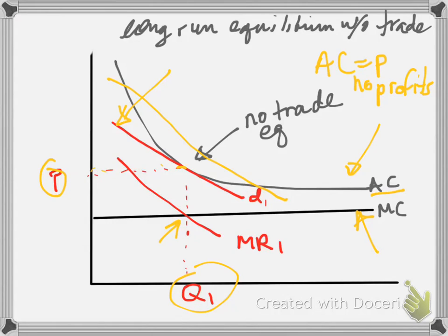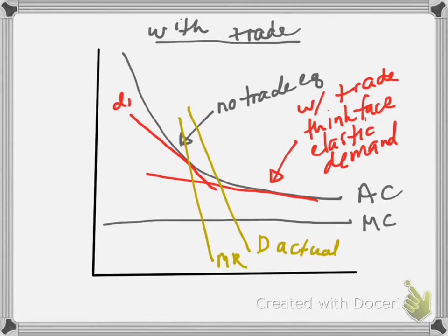There will be a price and a quantity in the market where those conditions hold, and that is the equilibrium. When there's trade, this demand curve will shift out to the right because now you can sell to foreign consumers. It will also get flatter because there will be more consumers who want your product, so your demand curve becomes more elastic — if you lower your price a little, you can sell a lot more.